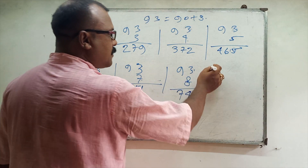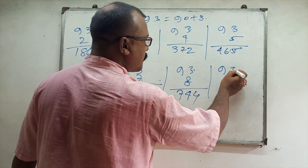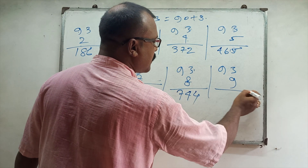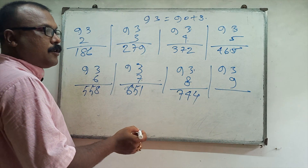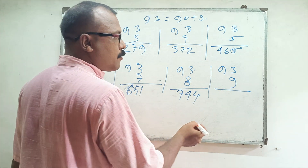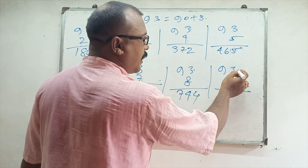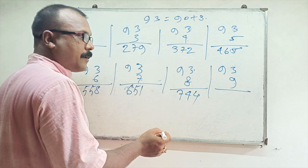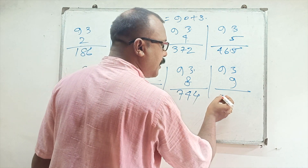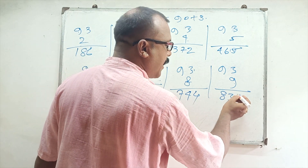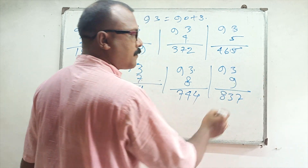93 nines: 9 nines are 81, 810 plus 27, so 837. Clear?